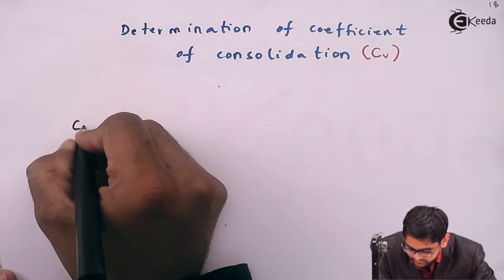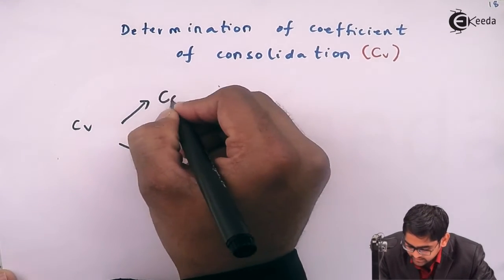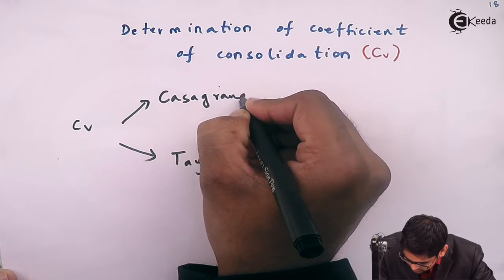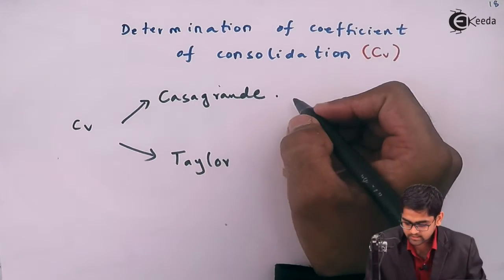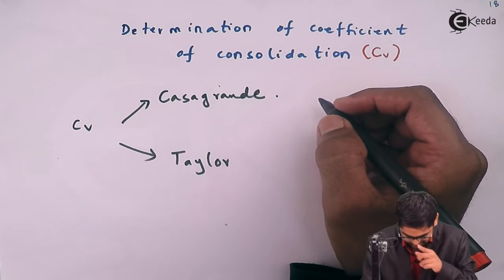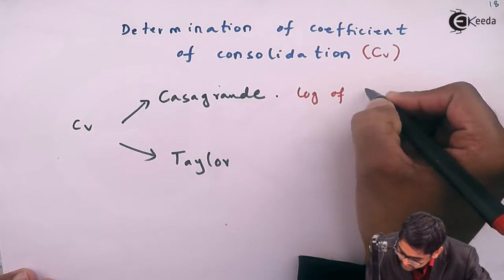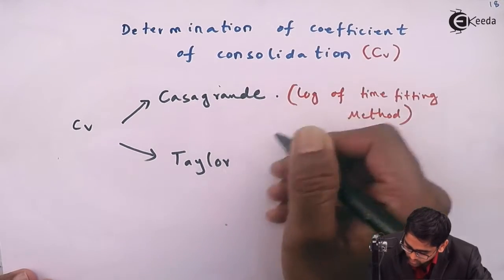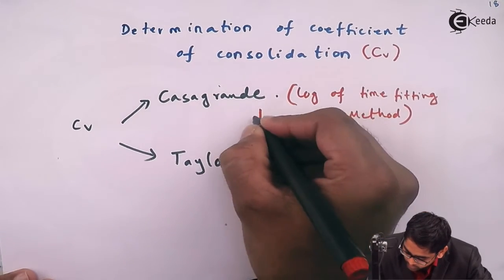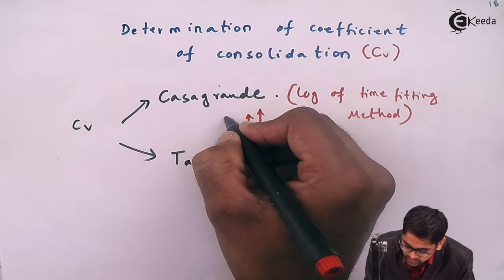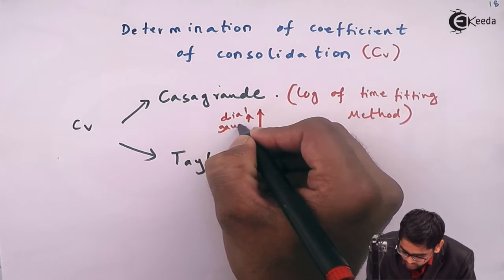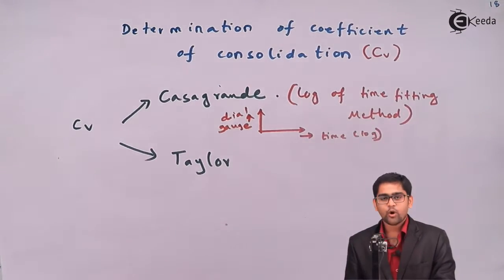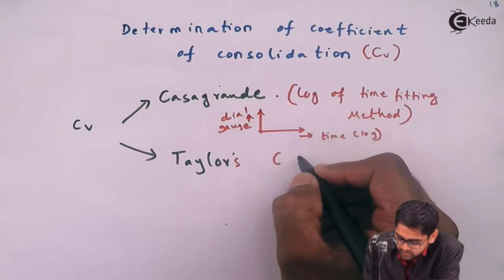For the determination of this coefficient of consolidation, we have two methods. The first method is led by Casagrande and another method is led by Taylor. The Casagrande method is also called the log method or log of time fitting method, because in the Casagrande plot we plot dial gauge reading versus time on a logarithmic axis.